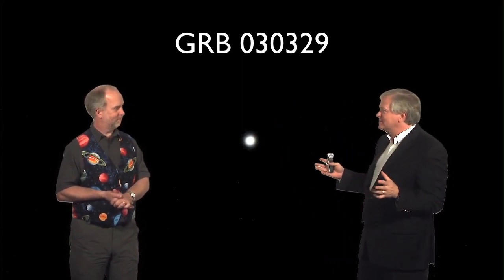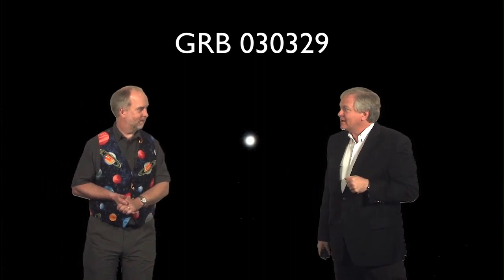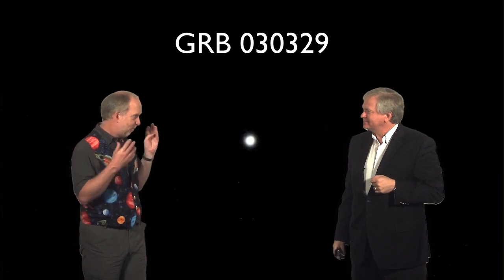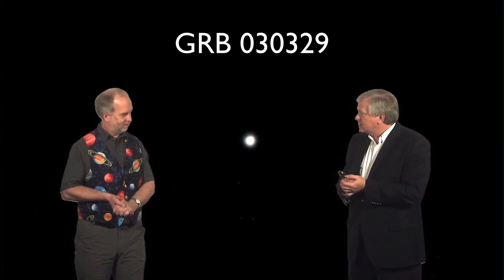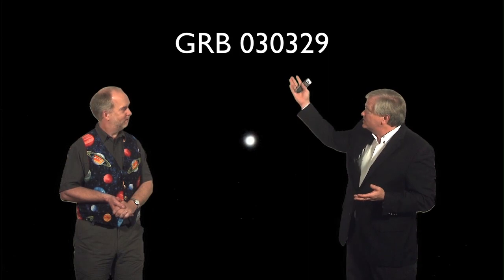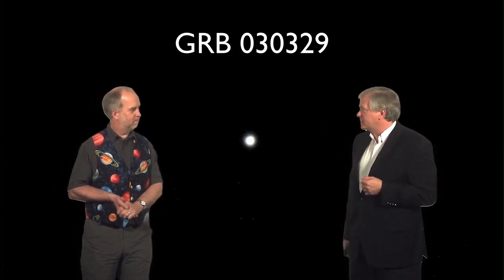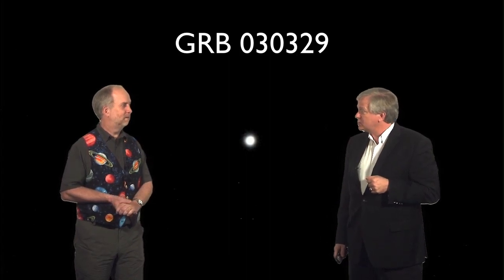So then as the gamma-ray burst faded, we all waited in anticipation, looking with the biggest telescopes at the spot to see if a supernova appeared. And voila, 12 days later, a supernova appeared that looked almost identical to the one of 1998. Same very high velocities. It was almost an identical twin in all ways and respects. So it does seem that these gamma-ray bursts are formed when a black hole is made in certain types of supernovae.